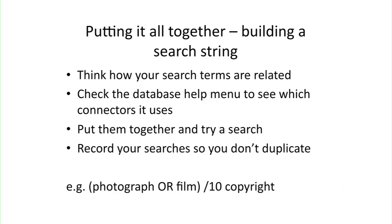Once you've thought about your search terms and connectors, you need to put it all together to start building what's called a search string. Think about how your search terms are related — are some terms more related to another? Do you definitely need all those search terms in the same search? Put them all together and try a search just to see what results you get. A lot of the time it is trial and error, and you do need to go back and revisit and try different searches. If you're finding that you're doing this, do record what you've actually searched for, as it is quite easy to duplicate or not realise which searches you've done.